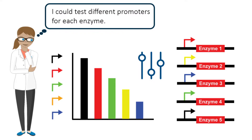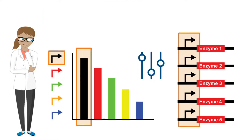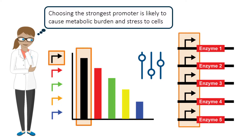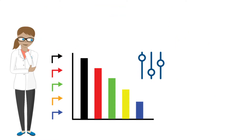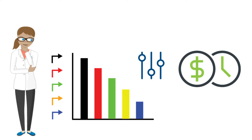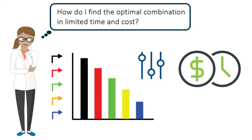Amy could test different promoter strengths to modulate and tune the expression of each enzyme. One simple approach would be to choose the strongest promoter for all five genes to overexpress the enzymes involved in the biosynthetic pathway. This will result in the highest expression of all the enzymes involved, which will affect the concentration of the product. However, doing so is likely to result in metabolic burden on the host cell, resulting in slow growth or cell death, which will negatively impact the concentration of the final product. Instead, Amy needs to fine-tune the expression level of each gene with the right promoter. However, constructing and testing each combination of promoters for all five genes will require extensive time and cost. How can Amy easily navigate through the libraries of promoters to find the optimal combination?